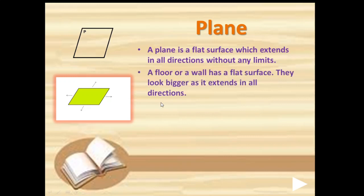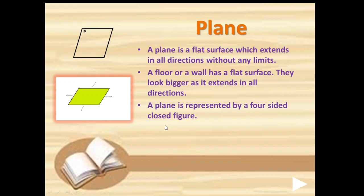A floor or a wall has a flat surface. They look bigger when we see walls of different rooms — all are big and of different sizes, but all are a flat surface. They look bigger as they extend in all directions. A plane is represented by a four-sided closed figure, where all four sides are linked to each other forming a closed box shape.